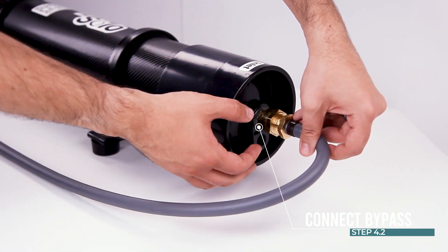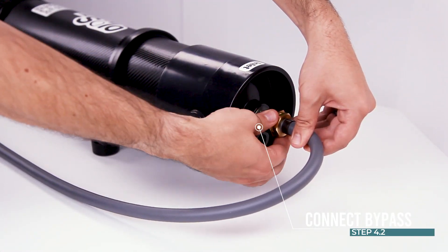Make system water tight by connecting bypass hose to inlet and closing the shutoff valve.